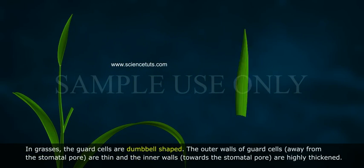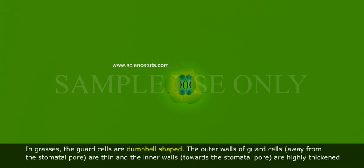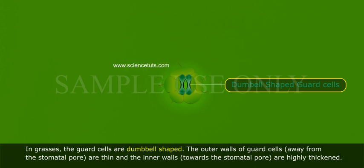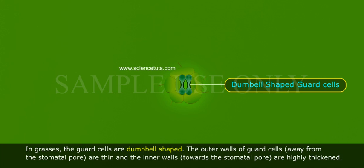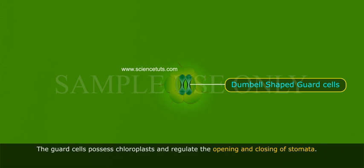In grasses, the guard cells are dumbbell-shaped. The outer walls of guard cells, away from the stomatal pore, are thin, and the inner walls towards the stomatal pore are highly thickened. The guard cells possess chloroplasts and regulate the opening and closing of stomata.